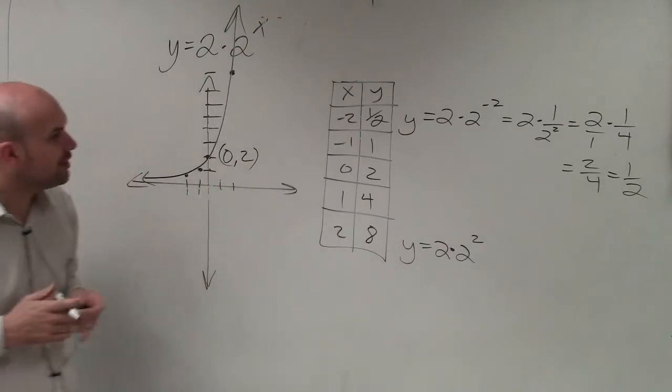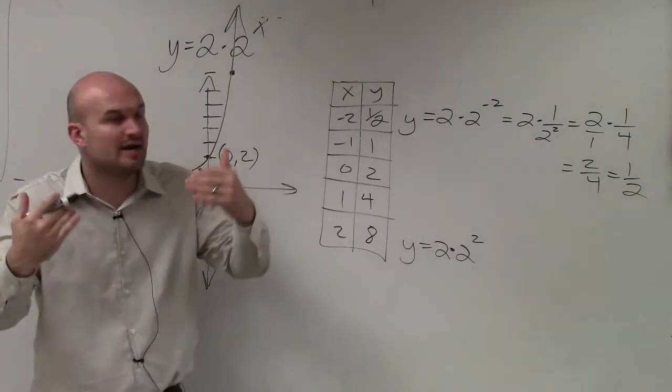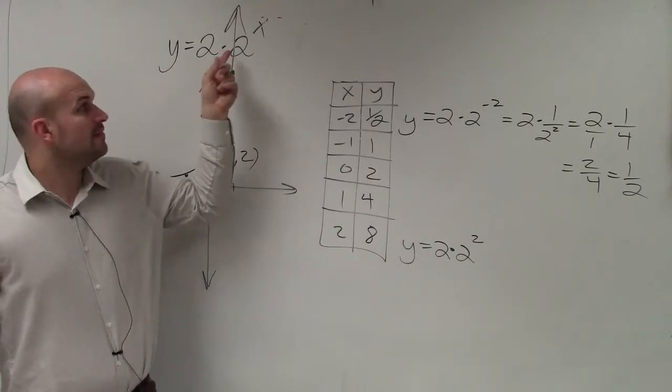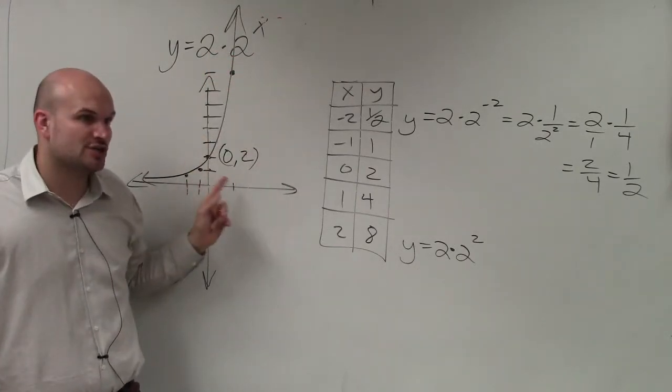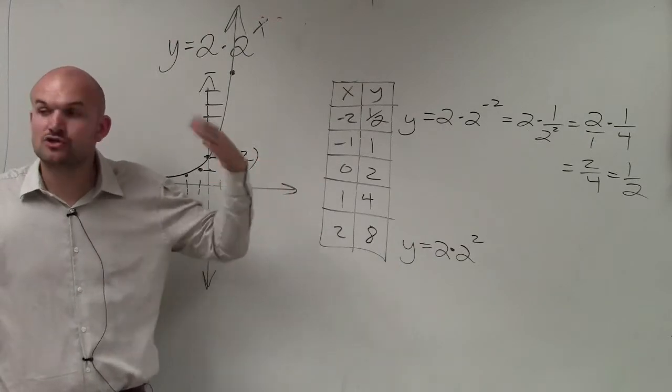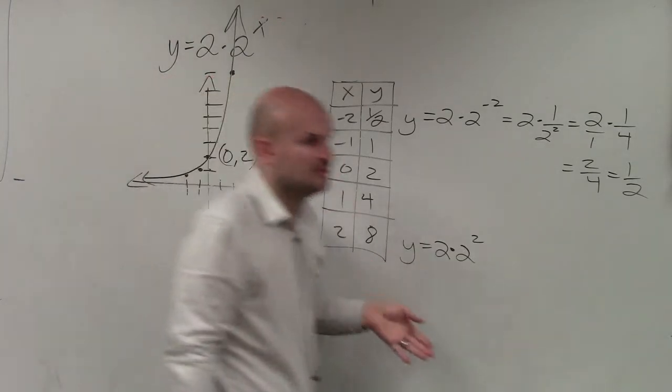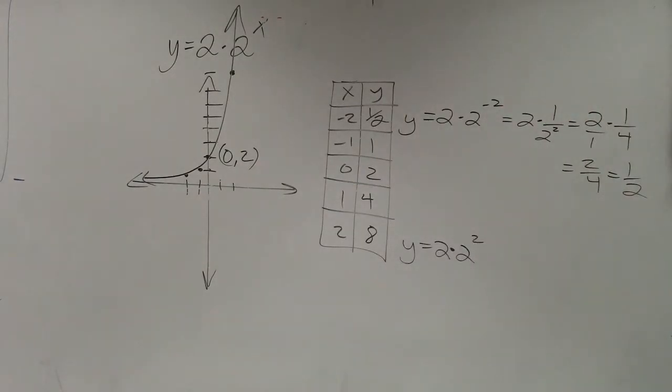So I still have my horizontal asymptote at 0, 0. But I want you guys to be aware that when you guys have a that's not equal to 1, your intercept is going to change. The graph is going to change. So when you're graphing something like this, you've got to make sure you guys go back and use a table of values.